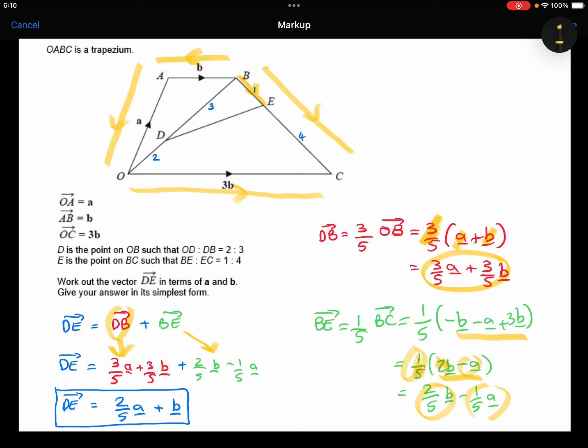Collecting those like terms together now for DE, we've got the 3 fifths a minus 1 fifth a, which is the 2 fifths a. And the 3 fifths b plus the 2 fifths b is 1b. And there we go. That's my answer for DE in terms of a and b.